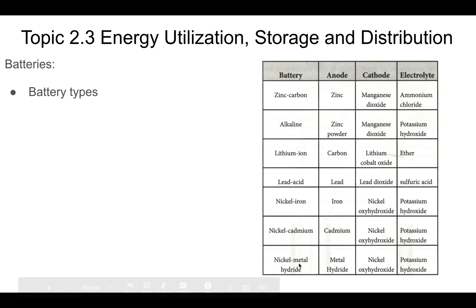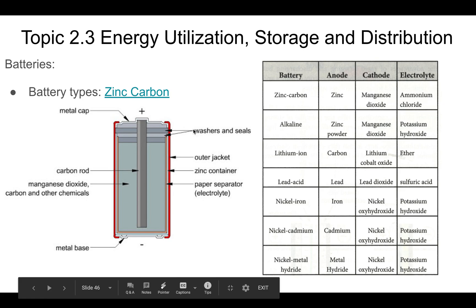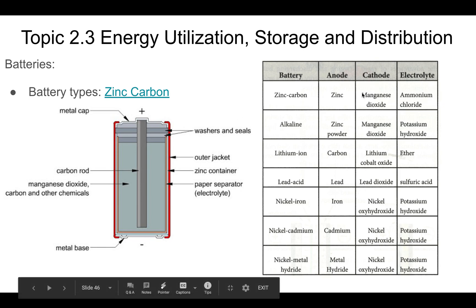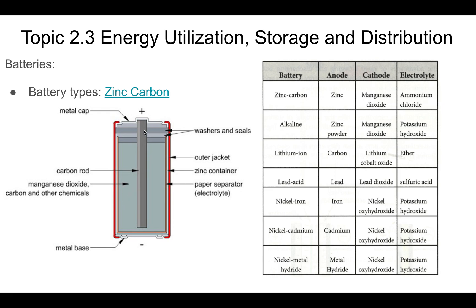Different battery types. Zinc carbon batteries are the standard throwaway batteries used in electronic devices — your AAs and AAAs. The anode is the zinc container itself, and the cathode is the manganese dioxide in the middle. The carbon rod doesn't generate the electrical current; what it does is conduct it — it takes the charge to the positive end. These are not rechargeable.